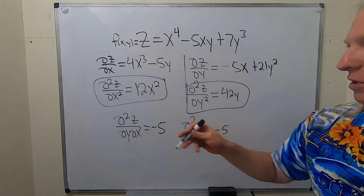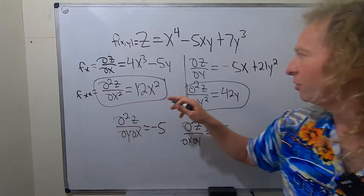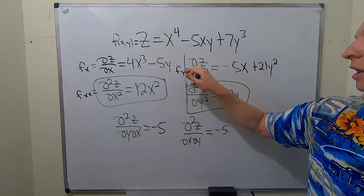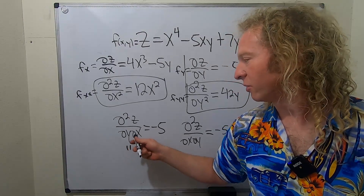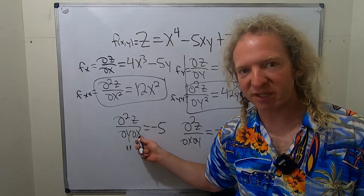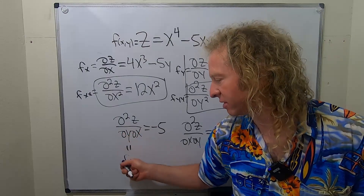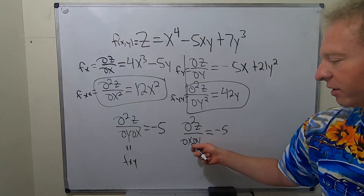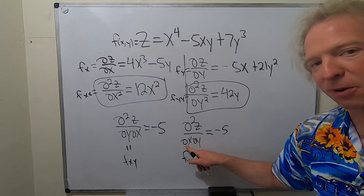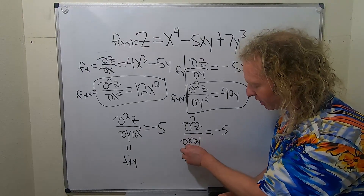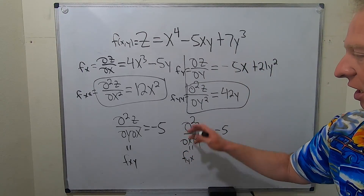If you use other notation for this, you can call this fx, you can call this fxx, you can call this fy, and you can call this fyy. And here's the tricky piece: so this is first you take the partial with respect to x, then the partial with respect to y — so this is fxy, read left to right. Here it's right to left: first you take the partial with respect to y, then with respect to x. So you read this right to left, you read this left to right — different notation, but it means the same thing.